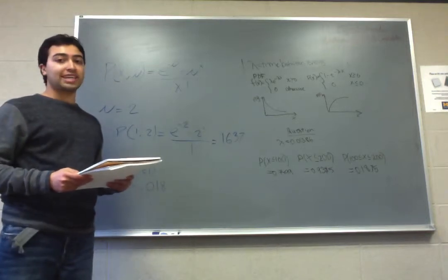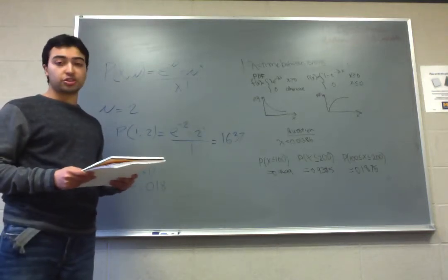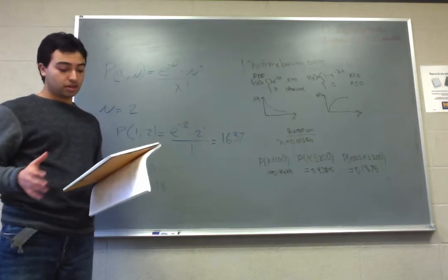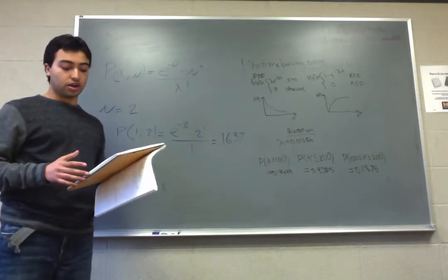We're going to talk about the Poisson distribution. The Poisson distribution is based on the probability of events that will happen in a given time. You're given a rate of gamma or mu.